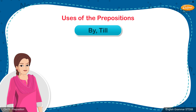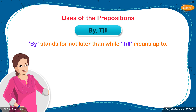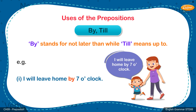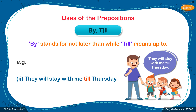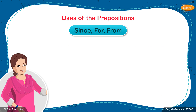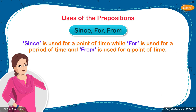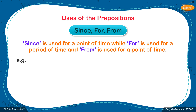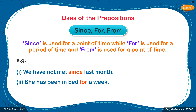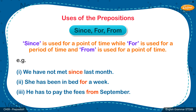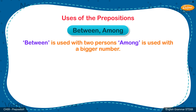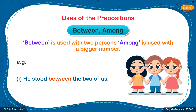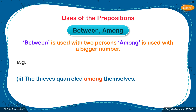By vs Till: 'By' stands for not later than, while 'till' means up to. Examples: 1. I will leave home by 7 o'clock. 2. They will stay with me till Thursday. Since vs For vs From: 'Since' is used for a point of time, while 'for' is used for a period of time, and 'from' is used for a point of time. Examples: 1. We have not met since last month. 2. She has been in bed for a week. 3. He has to pay the fees from September. Between vs Among: 'Between' is used with two persons, while 'among' is used with a bigger number. Examples: 1. He stood between the two of us. 2. The thieves quarrelled among themselves.